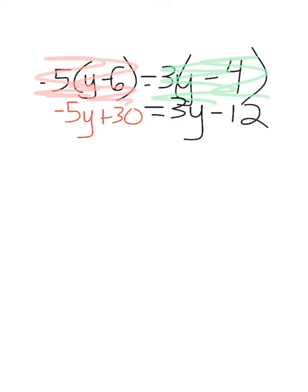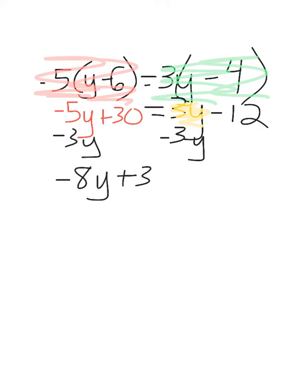Now I'm looking for any like terms. Negative 5y and 30 are not alike, and 3y and negative 12 are also not alike. So once again, I'm going to move my variable term off the right. I'm going to subtract 3y, so I end up with negative 8y plus 30 equals negative 12.